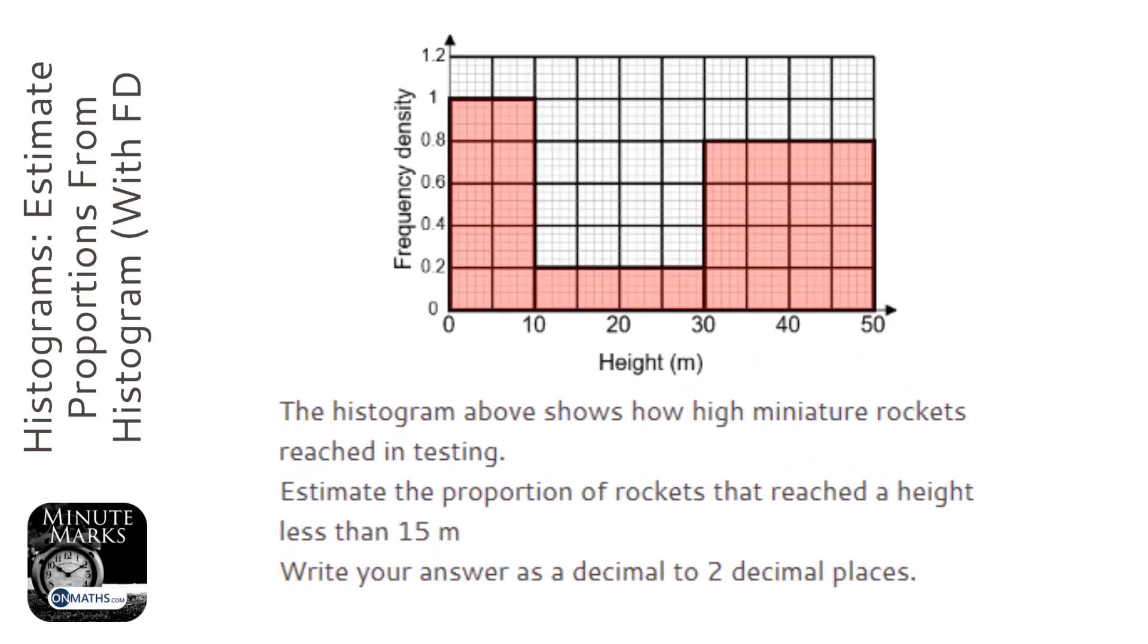So this question asks us to work out the proportion of rockets that reached a height less than 15 meters. So I'm going to draw a line up at 15 meters, which will be here.